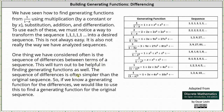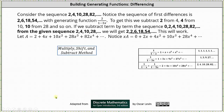The sequence of differences is often simpler than the original sequence. So if we know a generating function for the differences, we would like to use this to find a generating function for the original sequence. Let's consider the sequence two, four, 10, 28, 82, and so on.